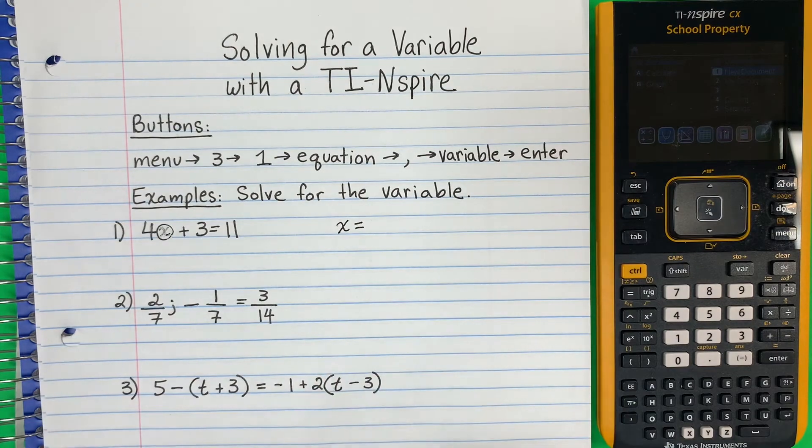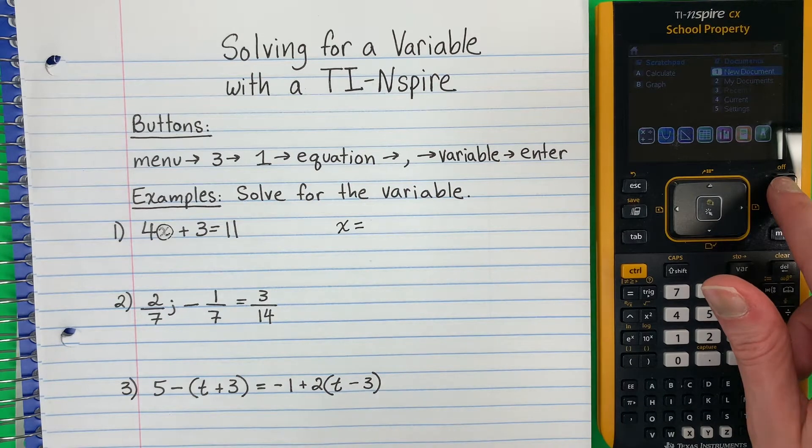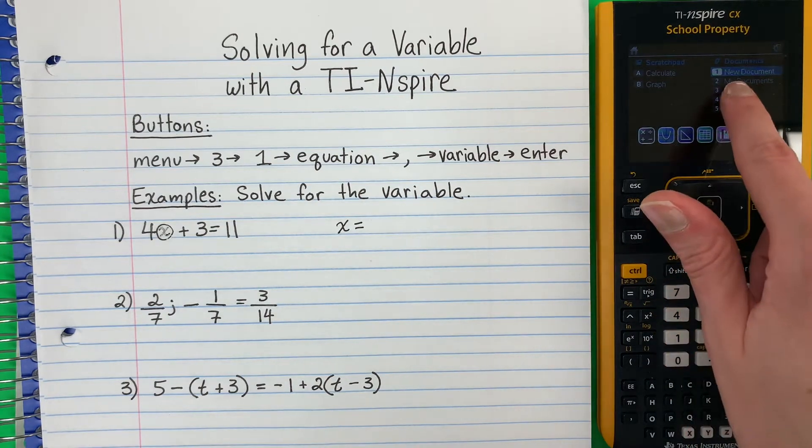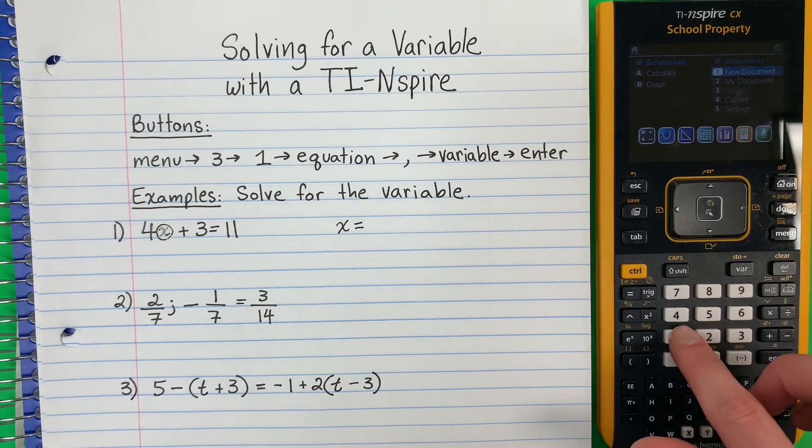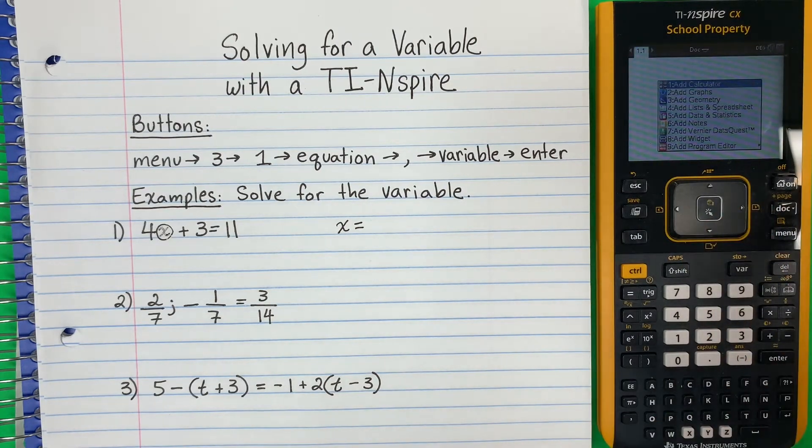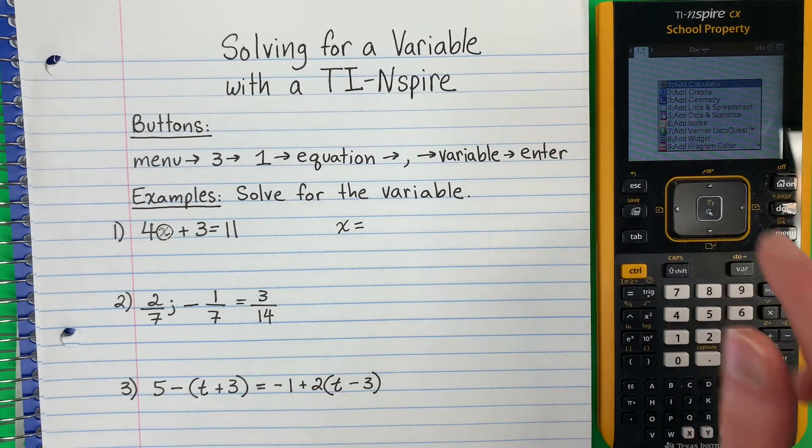And I'm going to go ahead and find my answer. So I'm going to turn on my calculator with this button. And I need to make a new document. Un nuevo documento. So 1. And then if it asks you yes or no, you put no. Okay, and I want to add the calculator. So number 1.